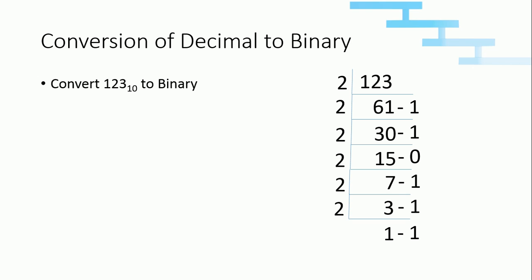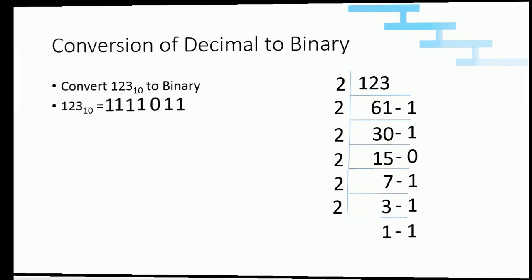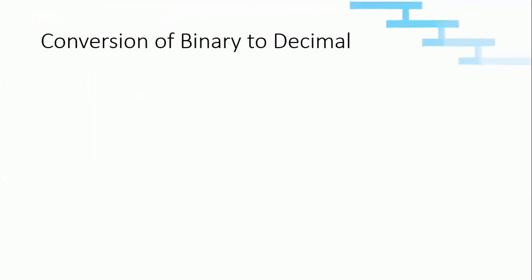We got 1. So now we need to write the remainders from bottom to top. Writing in this fashion — bottom goes first, next, next — we got the output: the decimal number 123 is now converted to binary number, its equivalent is 1111011.